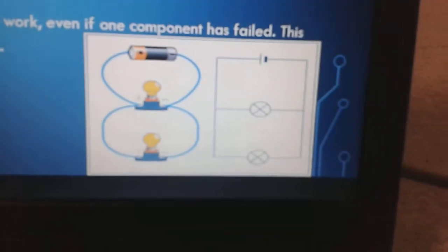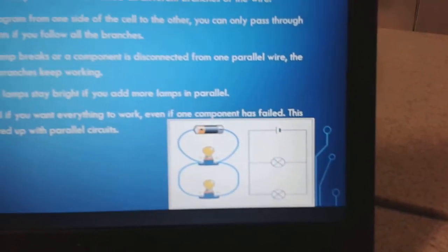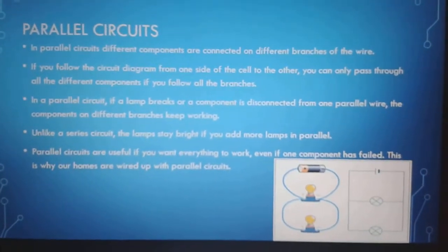If you follow the circuit diagram from one side of the cell to the other, you can only pass through all the different components if you follow all the branches.